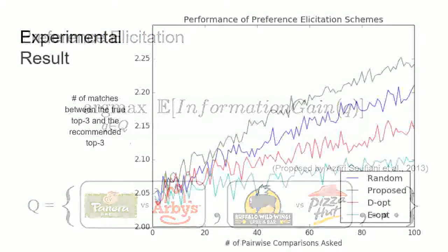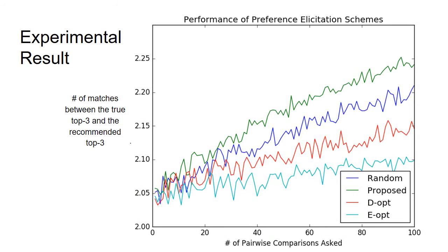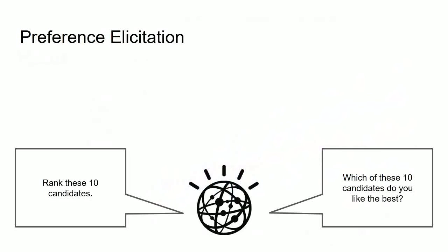We did some experiments with synthetic data. From the figure above, we can see that as we ask more and more questions using this information criterion rather than others, it's more likely to recommend a candidate that actually gives you high utility. This algorithm, or its methodology, can be used to ask a larger variety of elicitation questions, such as to rank or to pick the best from a set of 10 candidates.